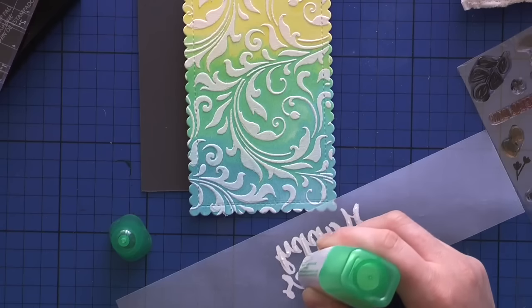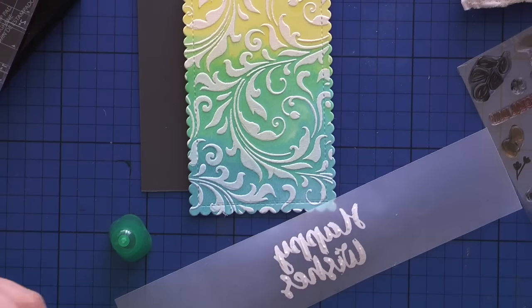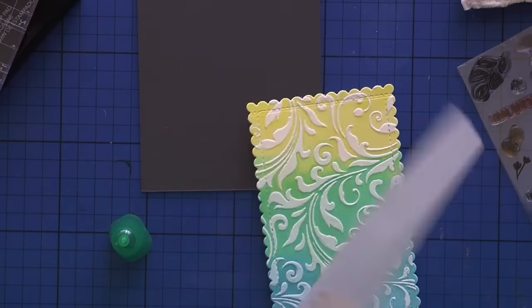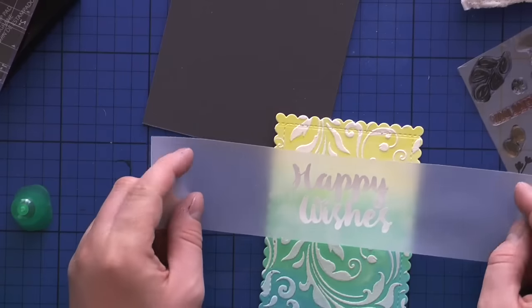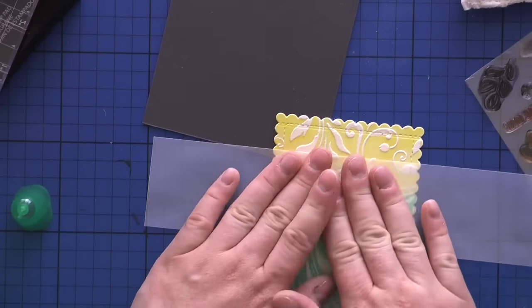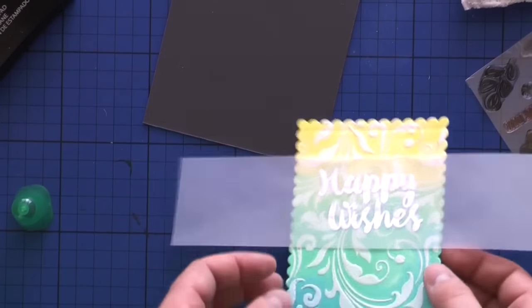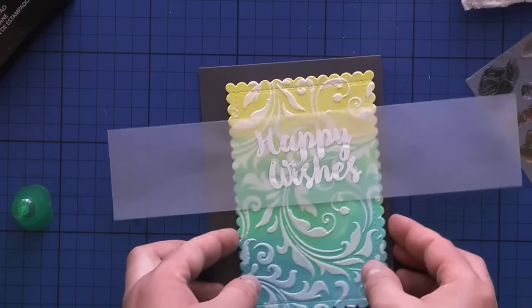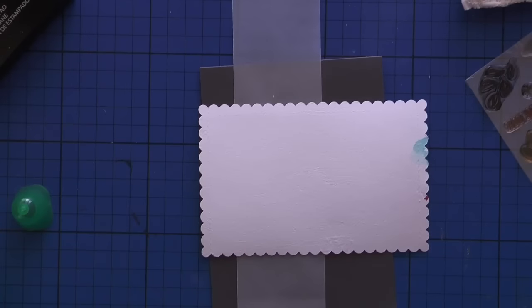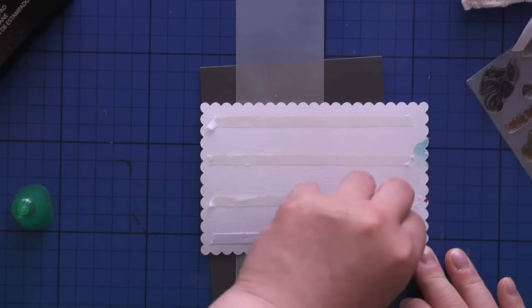I'm using Tombow Mono liquid glue at the back of my sentiment. Because it's really big, I can use that surface to add some glue. We all know how difficult it is to add vellum onto our panels without hiding the glue, so this big sentiment was really perfect for it.